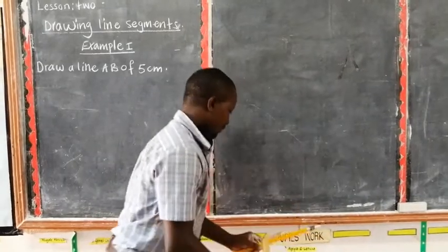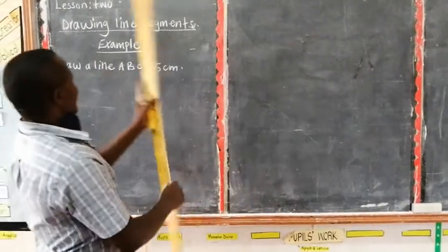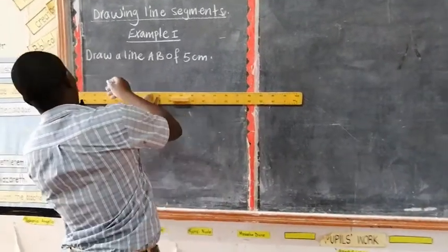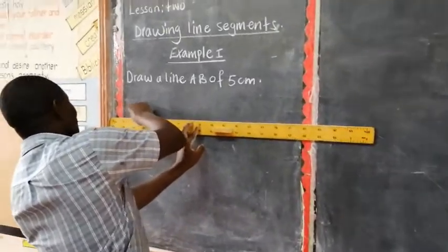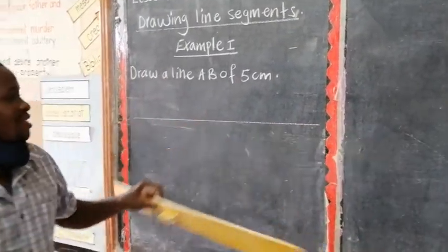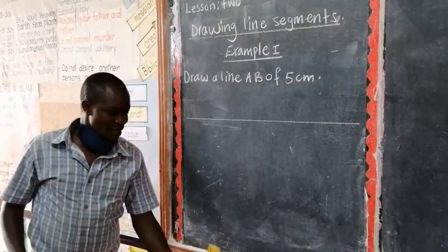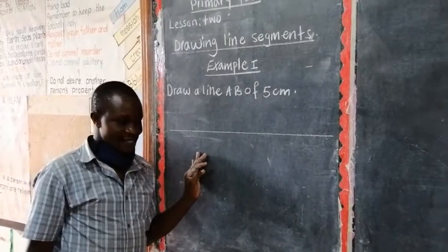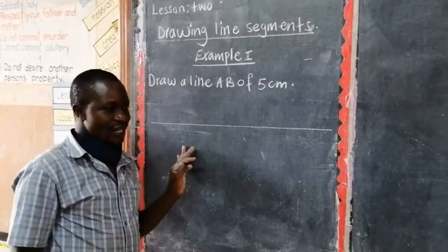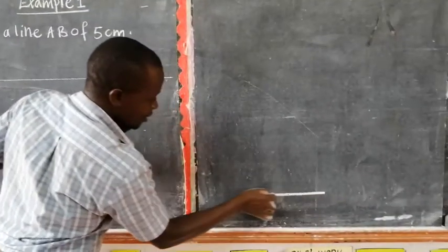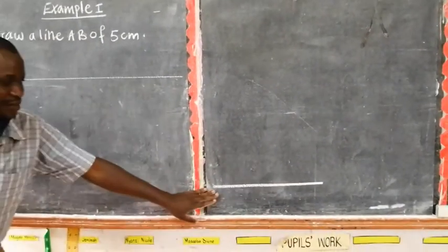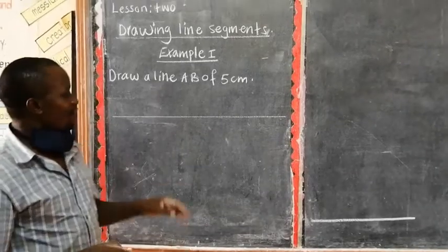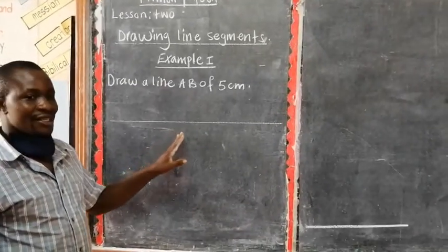Draw a line. Put a ruler on your book, you draw a line. When you are drawing a line you draw it once, don't repeat. When you are in construction a line should not be repeated and your pencil should be well sharpened. Don't draw a line of this nature like this, this one is too thick. Your lines should be drawn using a sharpened pencil.